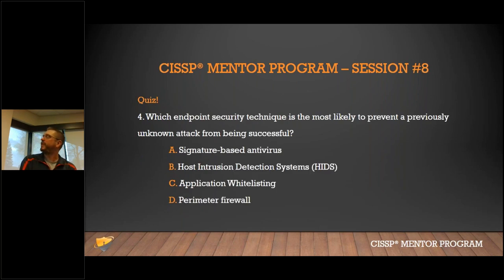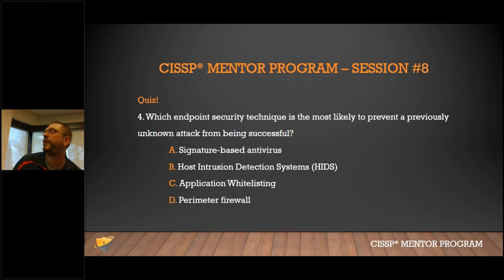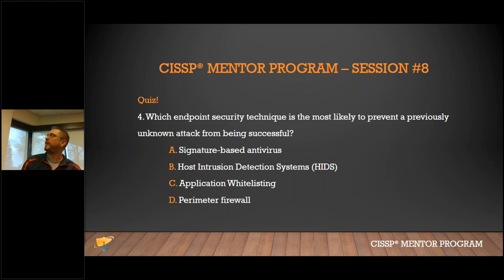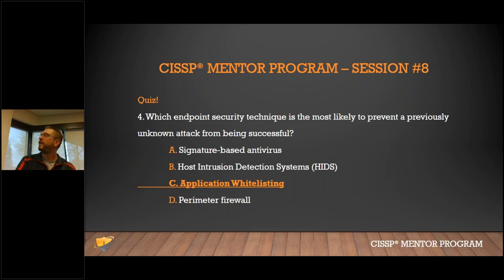What endpoint security technique is most likely to prevent a previously unknown attack? Options: signature-based, HIDS, application whitelisting, or perimeter firewall. Signature-based covers known attacks, so eliminate that. HIDS looks at the host. A perimeter firewall won't necessarily prevent an unknown one. Application whitelisting wins — it only allows approved applications to run.